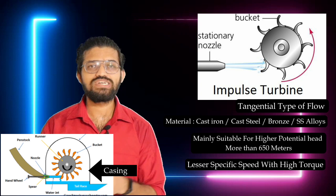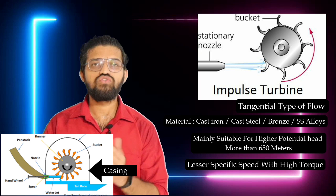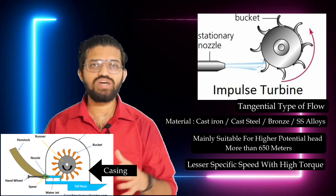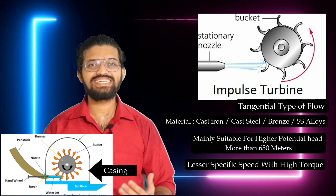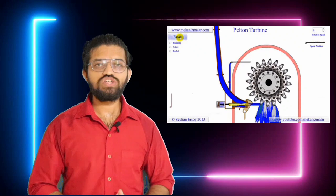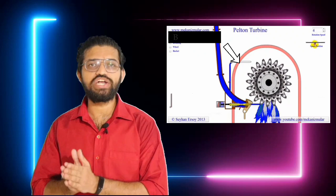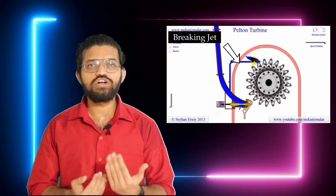A casing is provided around the turbine, made of materials similar to the turbine blades — cast iron, cast steel, or bronze. The main functions of the casing are to protect the Pelton wheel from the outer atmosphere, prevent water from dispersing outside, collect the water at the bottom in the tailrace, and act as a safeguard against accidents. When the Pelton wheel is rotating, a moment of inertia is induced, so even if the water supply is cut off, the wheel continues rotating.